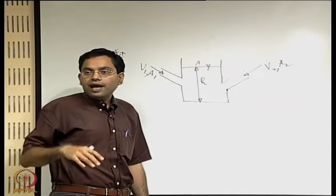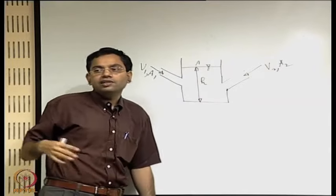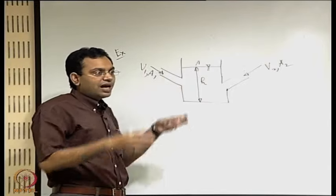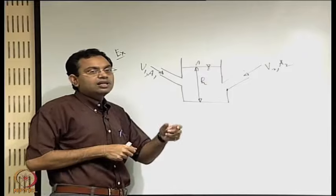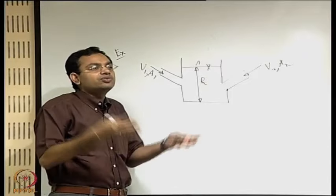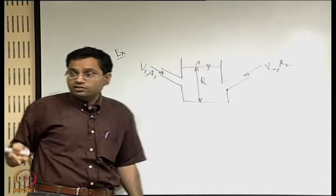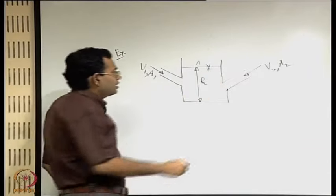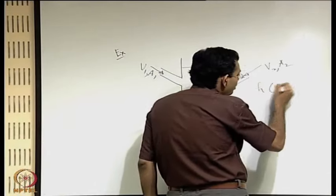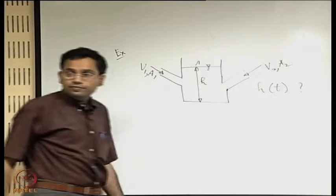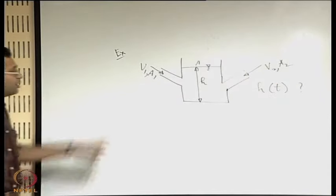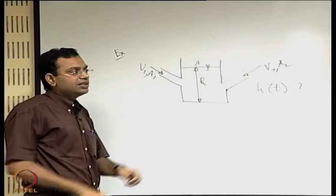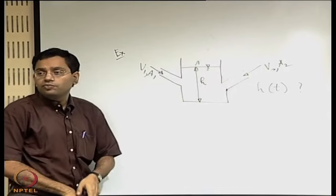If you have a reservoir and water is entering and leaving at the same rate, why should the level change? It will not. But here both flows are entering. So our objective is to find out how the height is changing with time, given these velocities and areas, with the understanding that the velocities are uniform over the area.